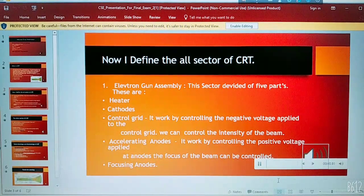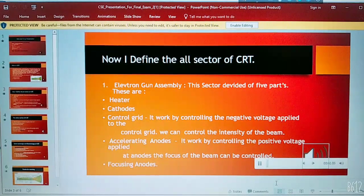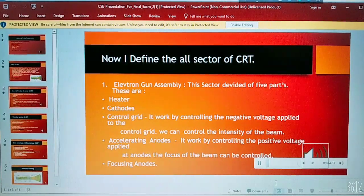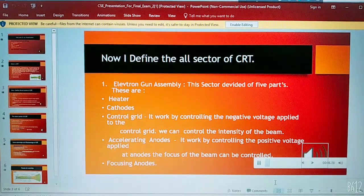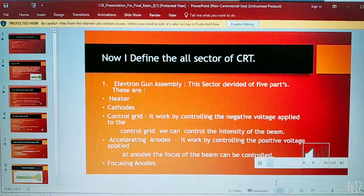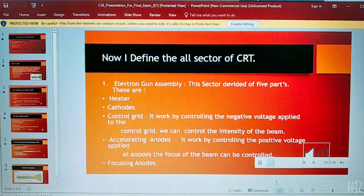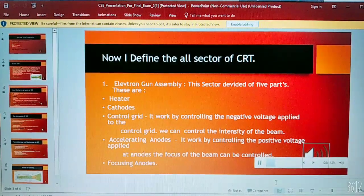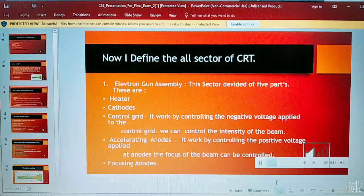Now I define all sectors of CRT. First I want to define the first one that is electron gun assembly. It is divided into five parts. First one is heater, then cathode, third one is control grid.